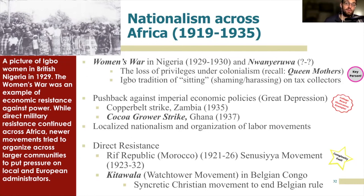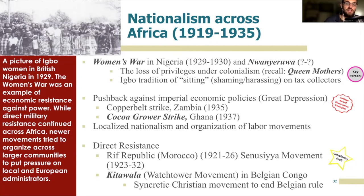Pushback against imperial rule could also be found in the form of labor strikes. Two large strikes in the 1930s were the Copper Belt Strike in what is now Zambia in Southern Africa, and the Cocoa Growers Strike in Ghana in 1937. In both cases, large groups of African laborers extracting or cultivating valuable imperial resources refused to accept meager pay or prices and organized to strike, demonstrating their ability to gain concessions from the imperial administration. The Cocoa Growers Strike is part of Ghana's national history curriculum and is described as a turning point in Ghanaian history — a seminal rallying point for those seeking Ghanaian independence.